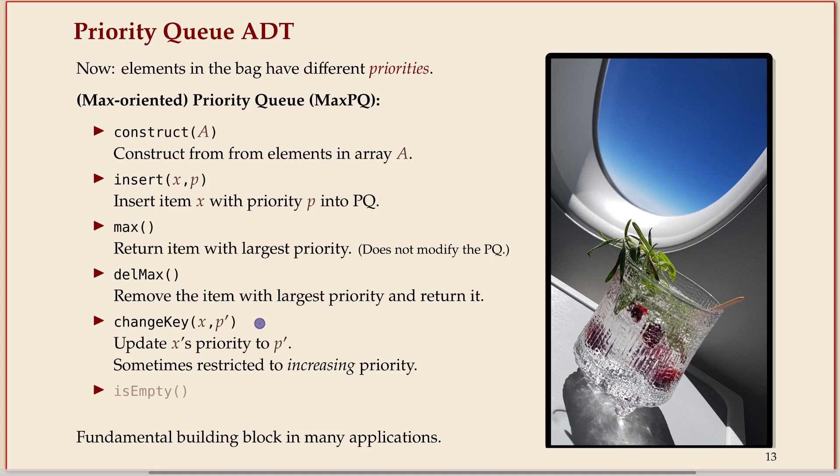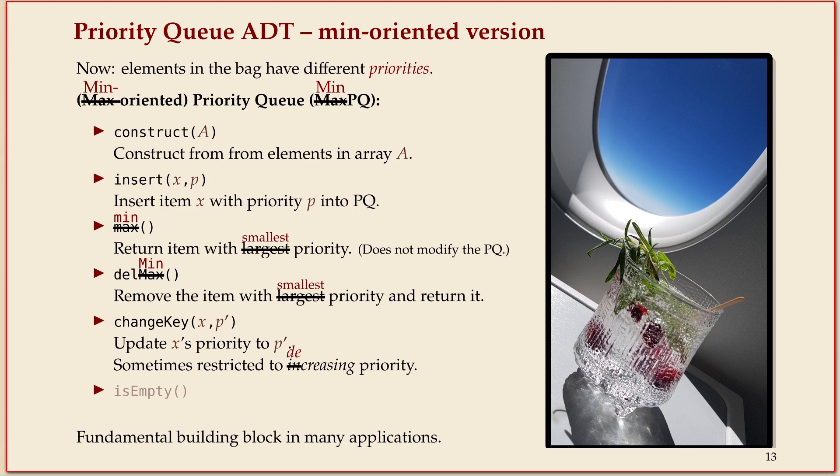And these two operations we'll try to do quick as well as insert. Sometimes we'll also need a change key operation where you can update the priority of something to a new priority. We'll only talk briefly about this, but insert and delete max are the main operations for priority queues. Now this is all formulated where the maximal element is what we'll remove. And I'll try to be consistent in using the max oriented version because that is what is used in the red book, the algorithms book that I gave you as a resource for this unit. But there is a symmetric version where everything where I say max is replaced by min and it's just the same thing.